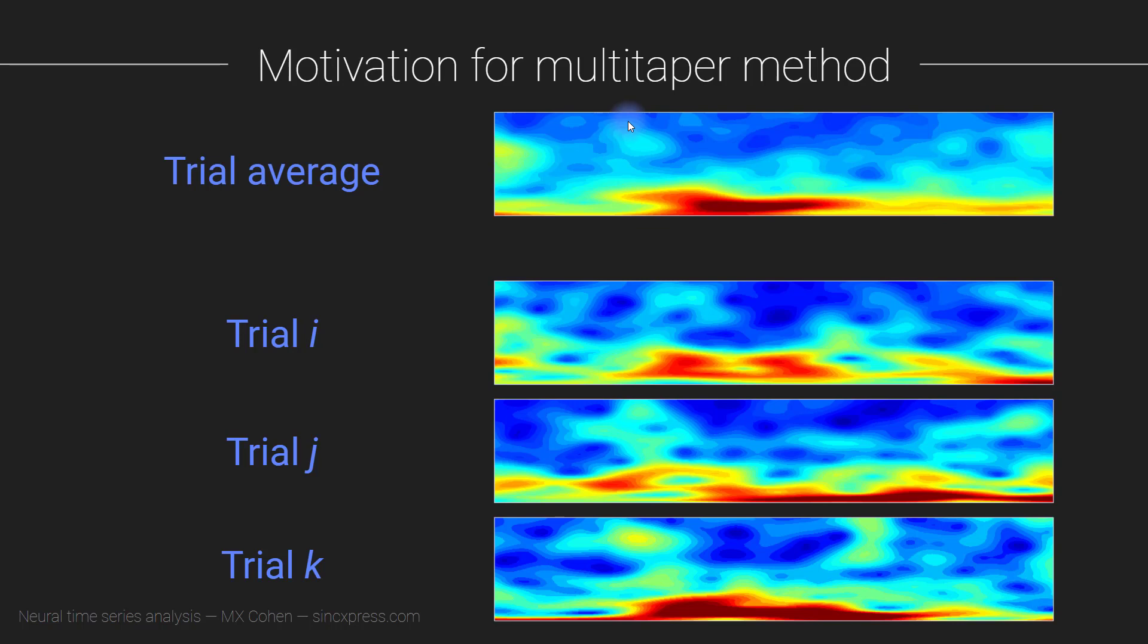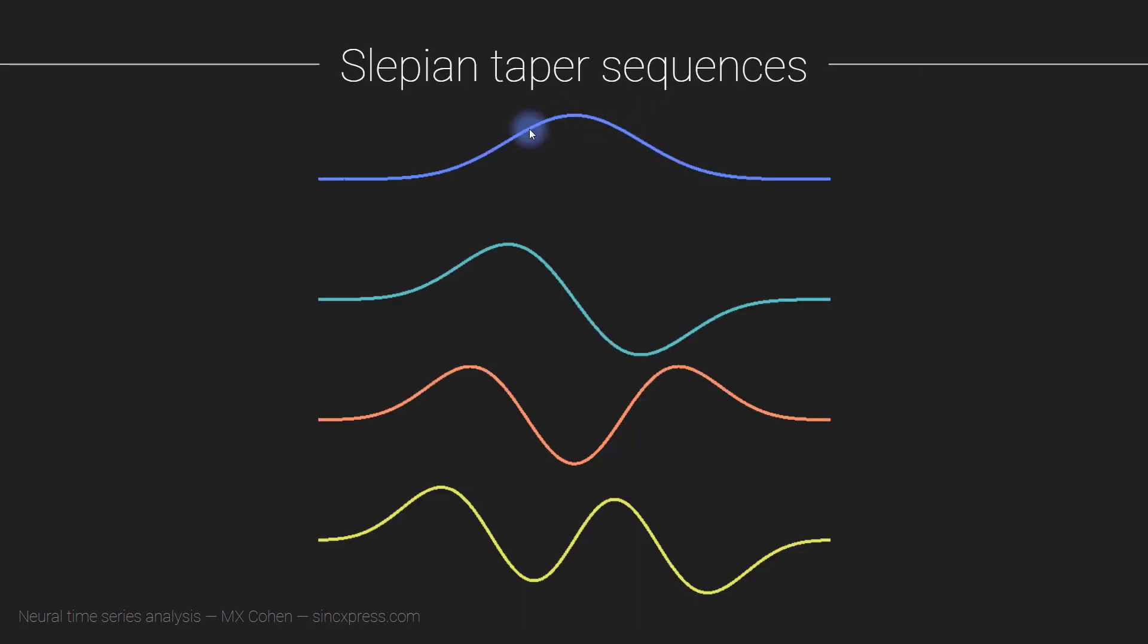So how does it work? How do we average across these larger time windows? Well, it works by starting from these things called Slepian tapers. And these are sequences of Slepian tapers. So they all come together as a team. They work together as a sequence.